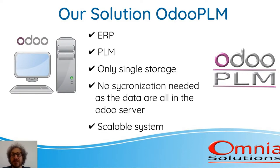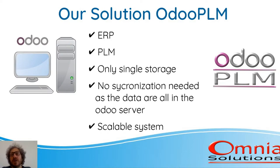Suppose that you create a new product — this product is directly inside Odoo and you can use it for production immediately. And of course, we have a scalable system because if you need more users or more functionality, you just need to improve Odoo and everything is set up.